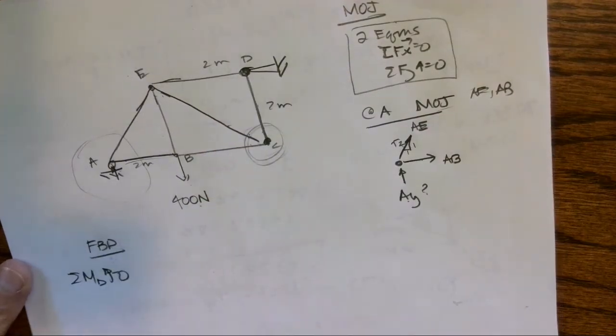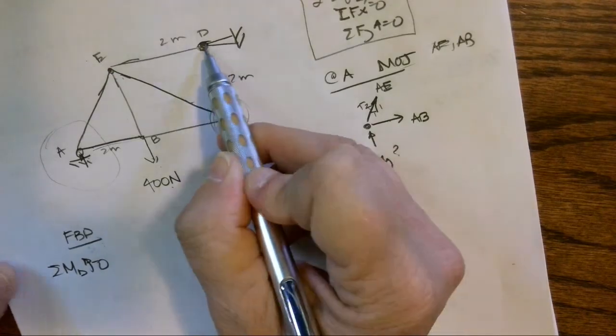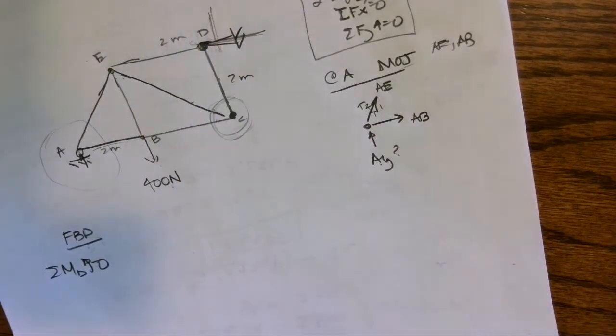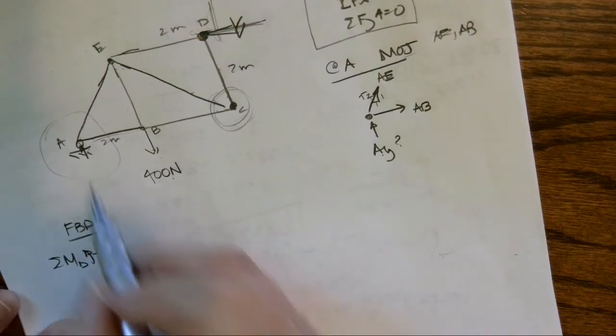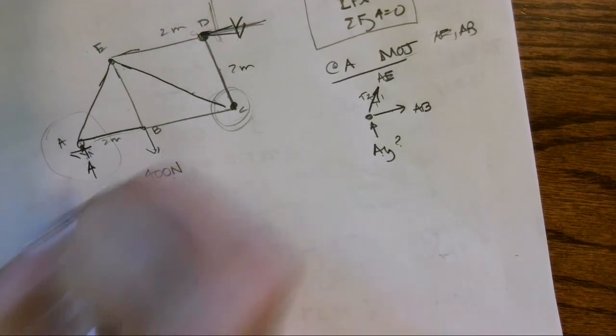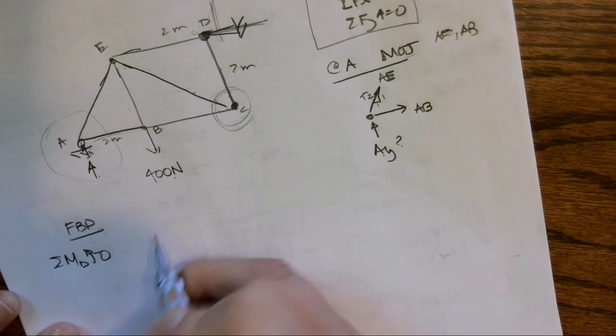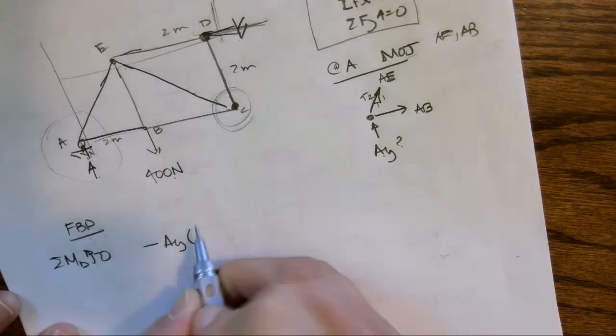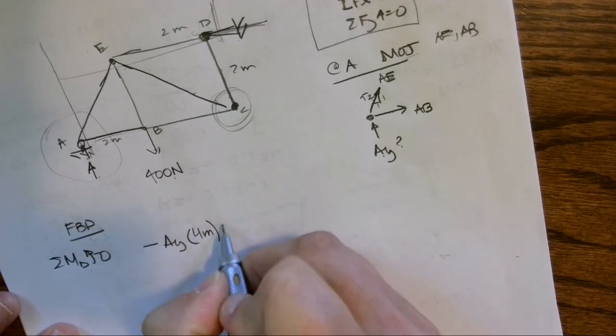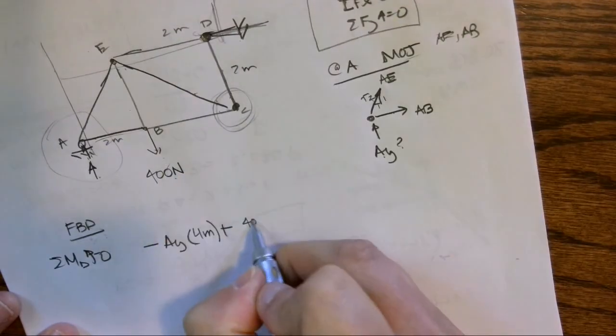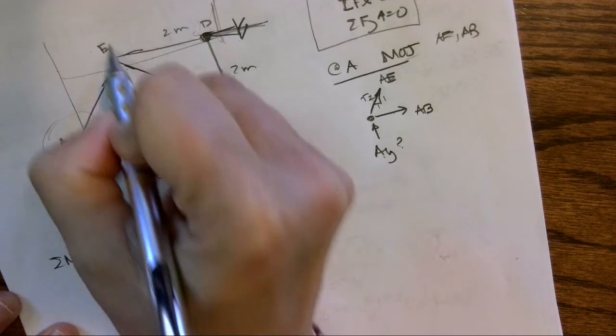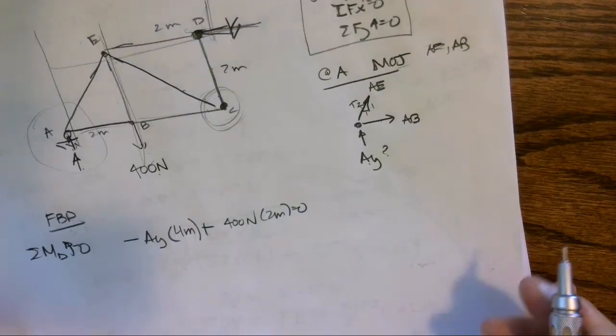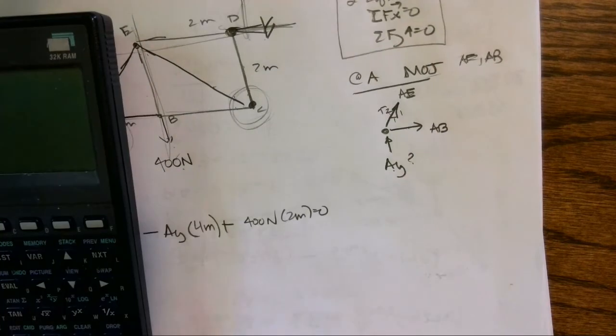And we know that they equal zero. I'm going to do D because this has a pin and it has X and Y, and I don't want to have to mess with that right now. So let's look here: I'm going to assume that Ay is going up, so I have negative Ay times perpendicular distance four meters, plus clockwise positive 400 Newtons times two meters equals zero.